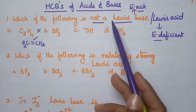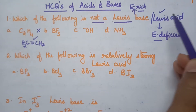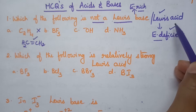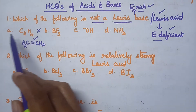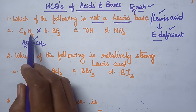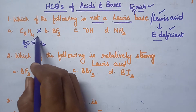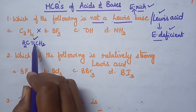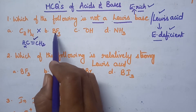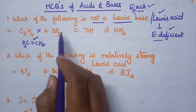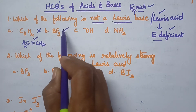Which of the following is not a Lewis base? Not a Lewis base means we have to identify which of the following is a Lewis acid. Lewis acid means it is an electron deficient compound, whereas Lewis base means it is an electron rich species. Coming to the given options, the first option is C2H4, which is ethylene (CH2=CH2). Since a double bond is present between the two carbon atoms, it acts as an electron rich species and hence is a Lewis base. The second option is BF3 (boron trifluoride), which consists of only six electrons and is electron deficient, so it acts as a Lewis acid.